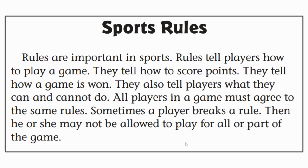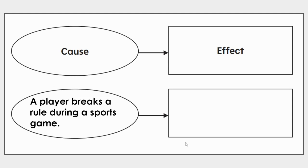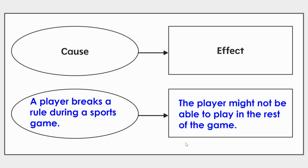Second graders, I'm going to stop and think for a moment. I think I identified a cause and effect in this story already. So I'm going to think about my graphic organizer. You are not responsible for writing this down right now — I would rather you listen and follow along. If the cause is a player breaks a rule during a sports game, what happens because of that? When a player breaks a rule, what is the effect? Do you remember from the book? Go back and reread the last paragraph. When a player breaks a rule, the player might not be able to play in the rest of the game. That is the effect for breaking a rule.